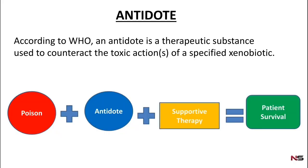First of all, we will see what is an antidote according to the WHO — World Health Organization. An antidote is a therapeutic substance which is used to counteract the toxic actions of a specified xenobiotic. When a poison is treated with an antidote along with supportive therapy, the patient will survive.